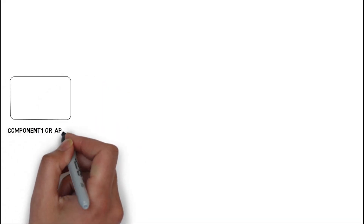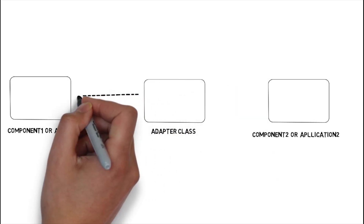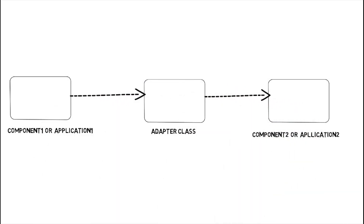Let's understand this with an example. If you have one component called component one and another called component two, and you want to make both components compatible with each other, you need to introduce one adapter class or adapter component. It will take input from component one and pass it to component two, or vice versa.